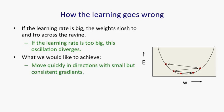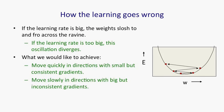What we want to achieve is that we go quickly along the ravine in directions that have small but very consistent gradients, and we move slowly in directions with these big but very inconsistent gradients. That is, if you go in that direction for a short distance, the gradient will reverse sign.